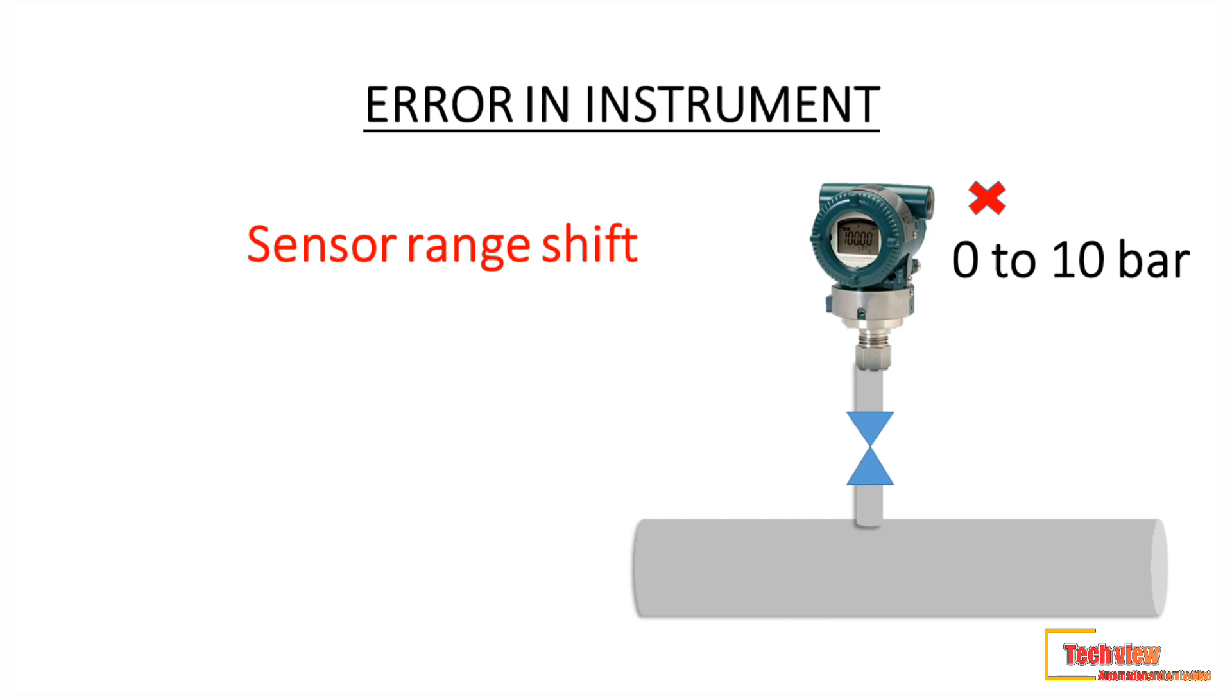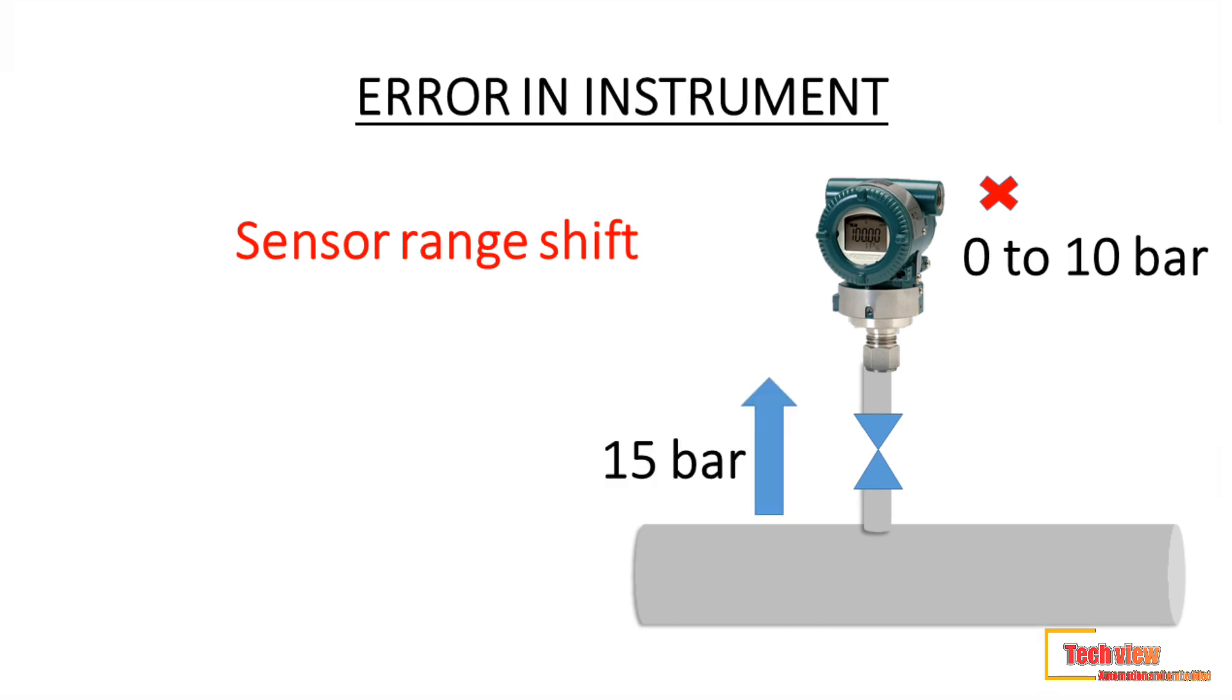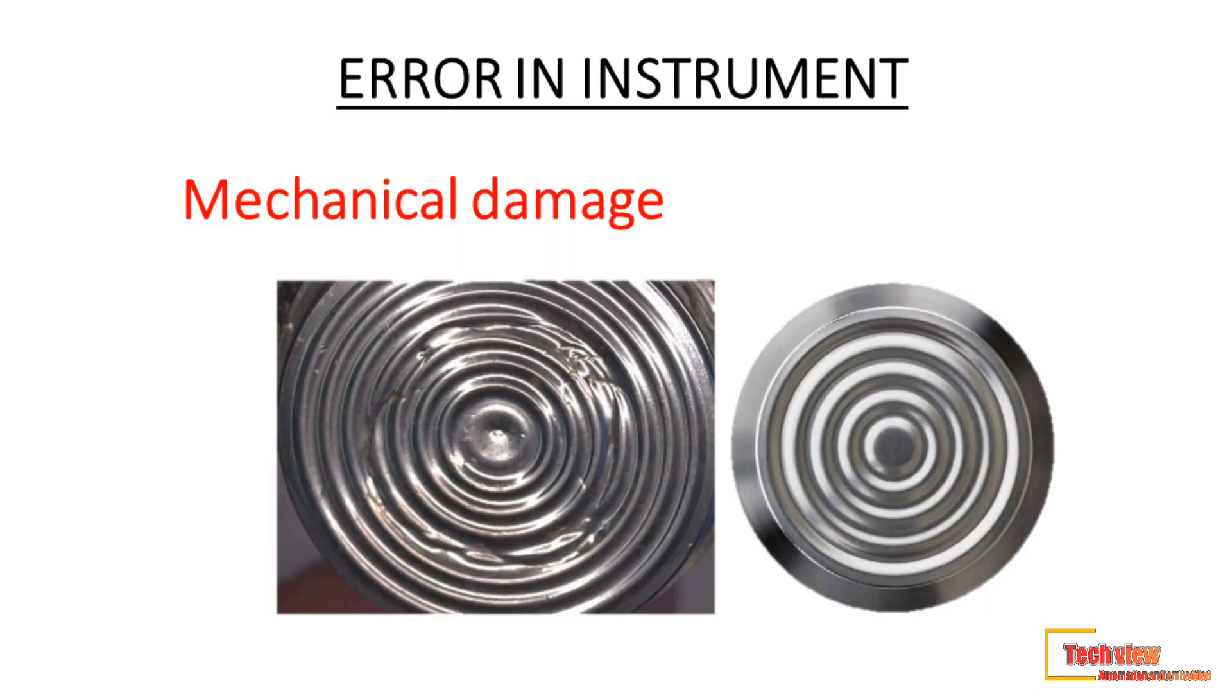For example, now the process is operating in the range of 0 to 10 bar, but change in operation may require 0 to 15 bar. Third, error in sensor occurred due to mechanical damage. In this case, replace the instrument or change the sensor.